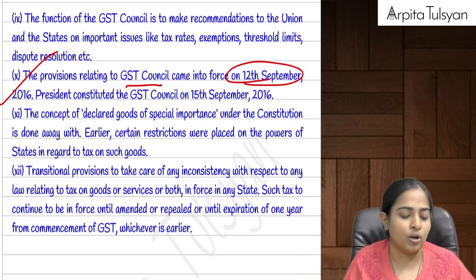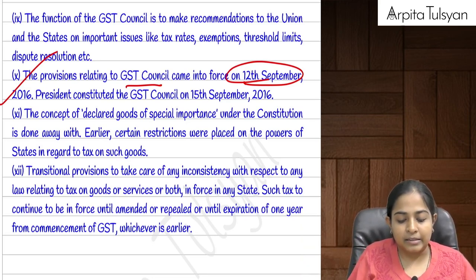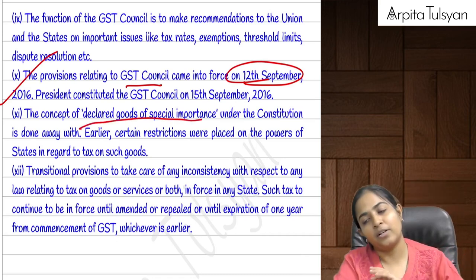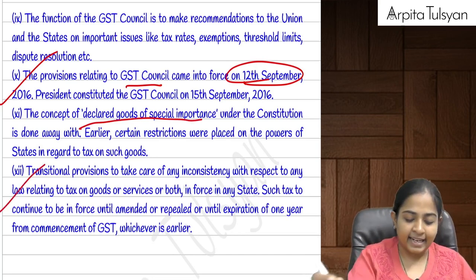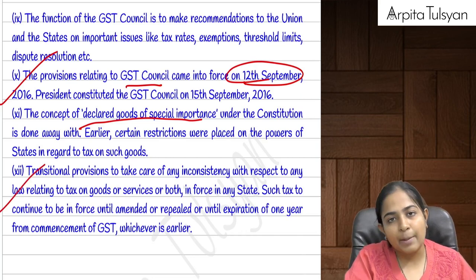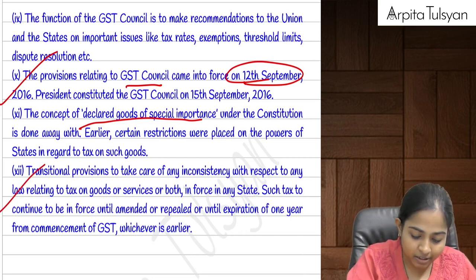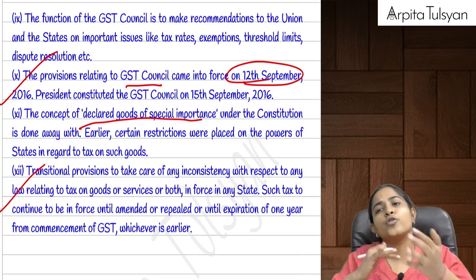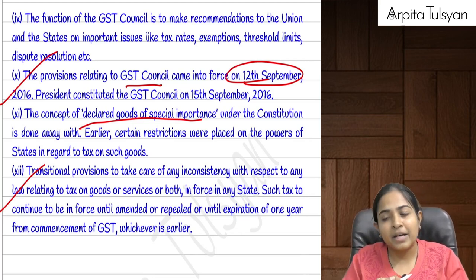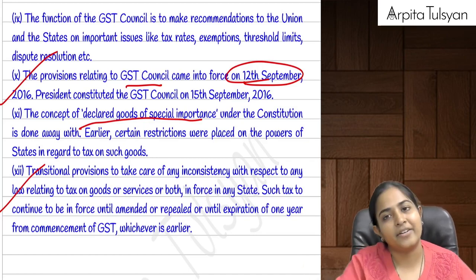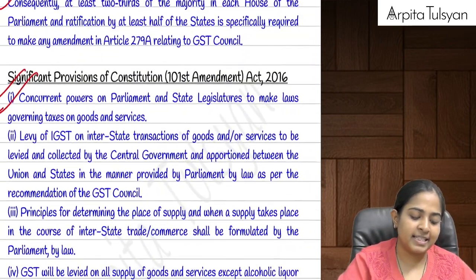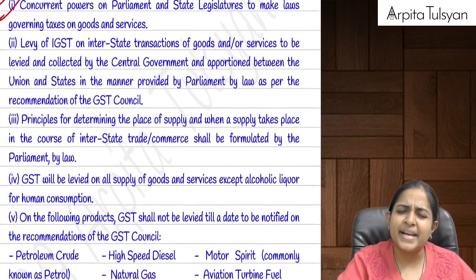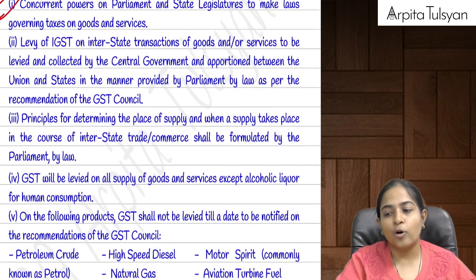Only after that did the GST law come into picture. Also, the concept of declared goods of special importance has been totally removed. From the date when GST came into picture, for a period of one year there will be transitional provisions — since we are going from old law to new law, some ease and convenience will be given for the purpose of smooth transitions.